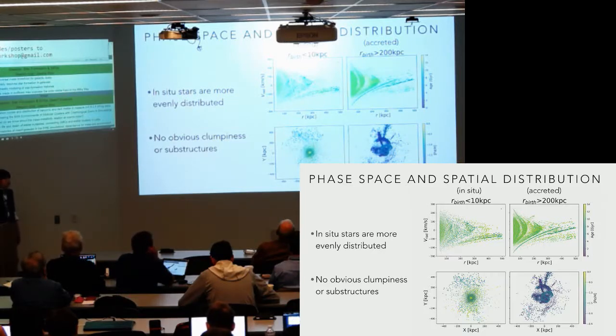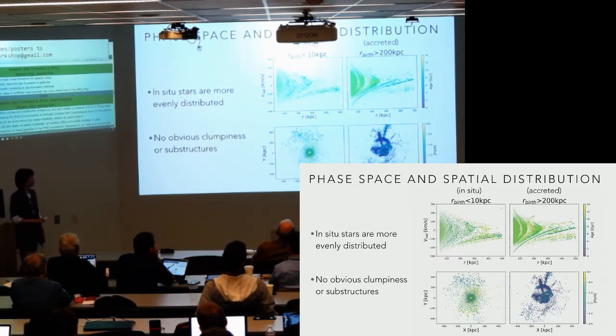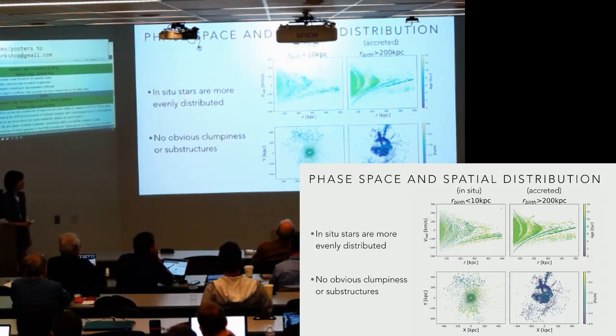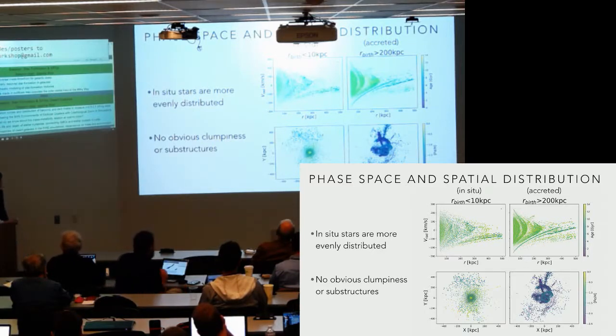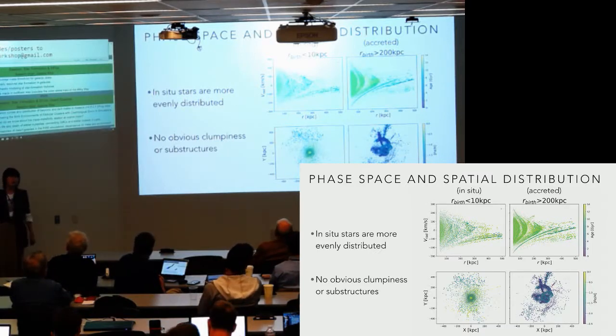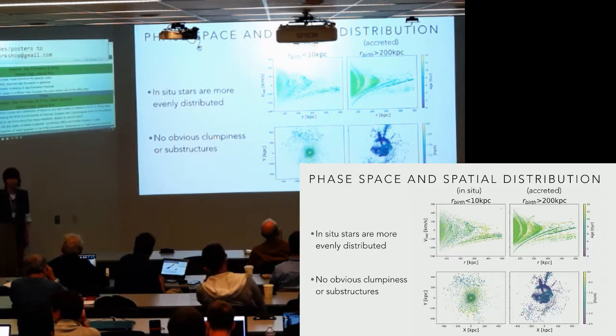For example, here I'm showing the phase space and spatial distribution for the two populations for comparison. In the top panel, we are showing the phase space distribution, and they're color-coded by the stellar ages. In the bottom panel, we're showing the face-on projection of the spatial distribution of the two populations, color-coded by the metallicity of the stars. As you can see here, compared with accreted stuff, the in-situ stars are more evenly distributed and we don't see a lot of obvious clumpiness or substructures here. Also, if you look at the bottom panel, you may have already noticed that there is a color difference here between the two populations.